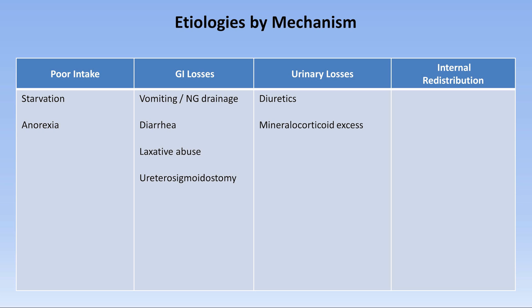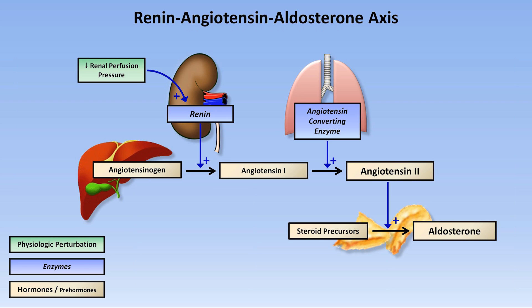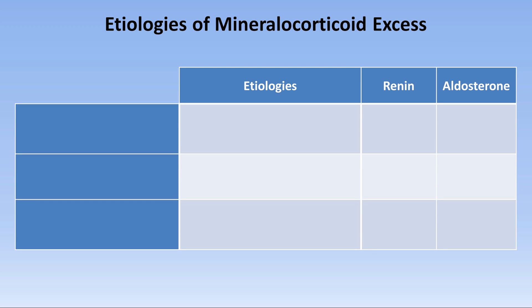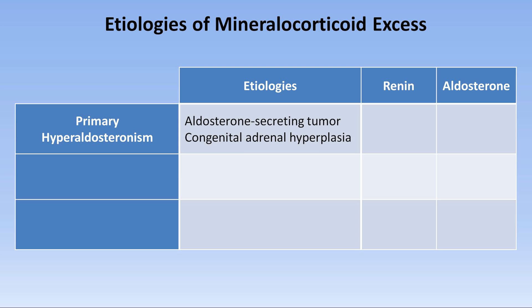Mineralocorticoid excess is also a major cause of urinary potassium loss. Reviewing the renin-angiotensin-aldosterone axis: it starts with low renal perfusion pressure, which leads to release of the enzyme renin. Renin converts angiotensinogen to angiotensin 1, which is then converted to angiotensin 2, which stimulates production of aldosterone. First, there is primary hyperaldosteronism — too much aldosterone — seen with aldosterone-secreting tumors and the rare congenital adrenal hyperplasia. While aldosterone is elevated, renin levels are usually low or occasionally normal.